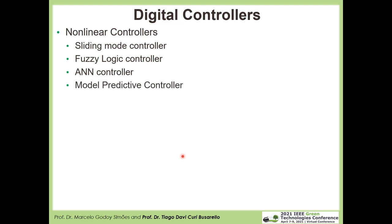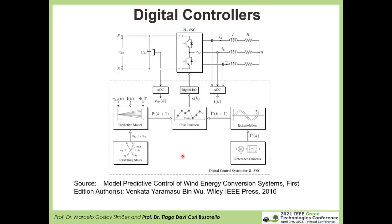Regarding nonlinear controllers, we may find the sliding mode controller, the fuzzy logic controller, artificial neural network controller, the model predictive controller — which is a really attractive controller for nonlinear power electronic applications — and adaptive controllers, which are basically linear controllers but with adaptive coefficients updated by an algorithm. This figure shows an example of a model predictive controller with completely nonlinear functions like extrapolation, minimization of a cost function, and a predictive model. This book is considered the best reference for model predictive control for power electronics applications.